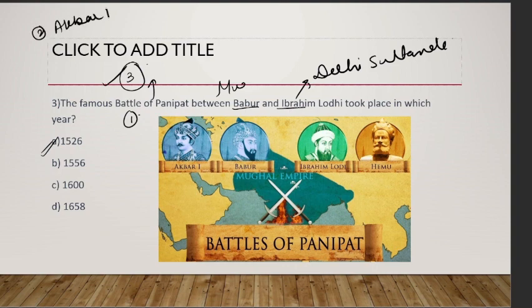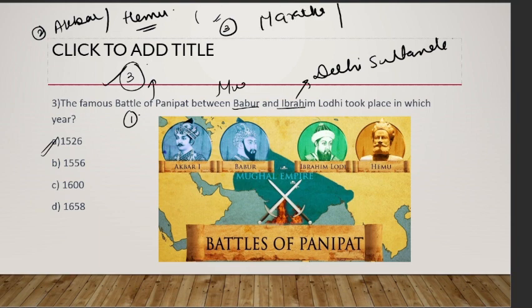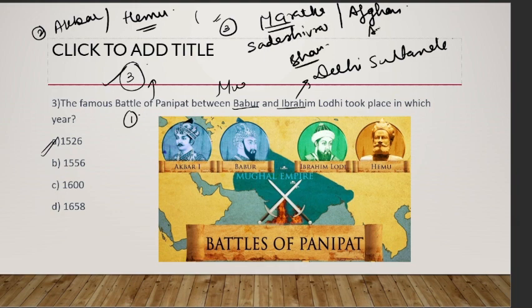The Second Battle of Panipat was fought between Akbar and Hemu, a Hindu king who was from the old Delhi Sultanate. The Third Battle of Panipat was fought between the Marathas and the Afghans. On the Maratha side it was led by Sadashiv Rao Bhau, and the Afghan side was led by Ahmad Shah Durrani, who won the third battle. Panipat was strategically important because of its fertile plains and location in Haryana, making it ideal for battles.